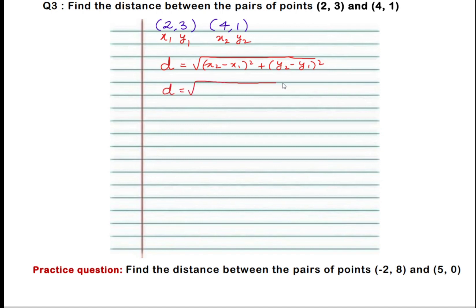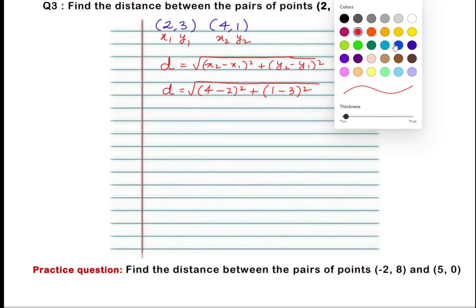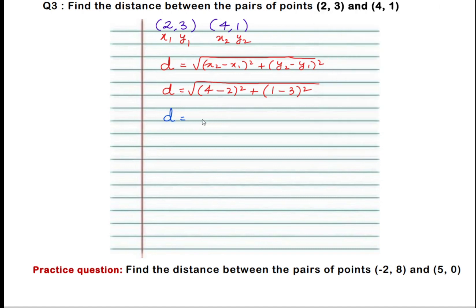Substituting the values: d equals square root of (4 minus 2) whole squared plus (1 minus 3) whole squared. 4 minus 2 is 2. For 1 minus 3: we are subtracting a bigger number from a smaller number, so 3 minus 1 is 2 and we put the bigger number's sign, giving minus 2. Therefore 1 minus 3 is minus 2, so we have minus 2 whole squared.